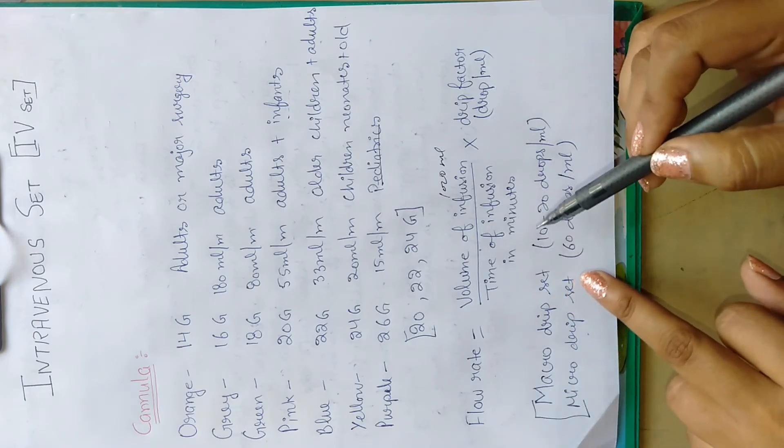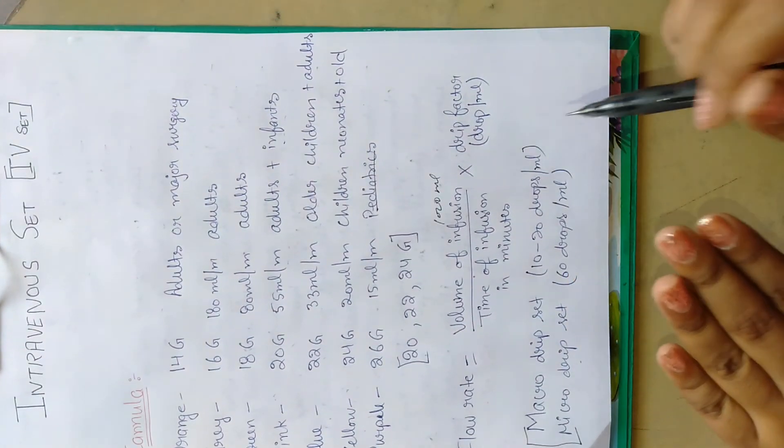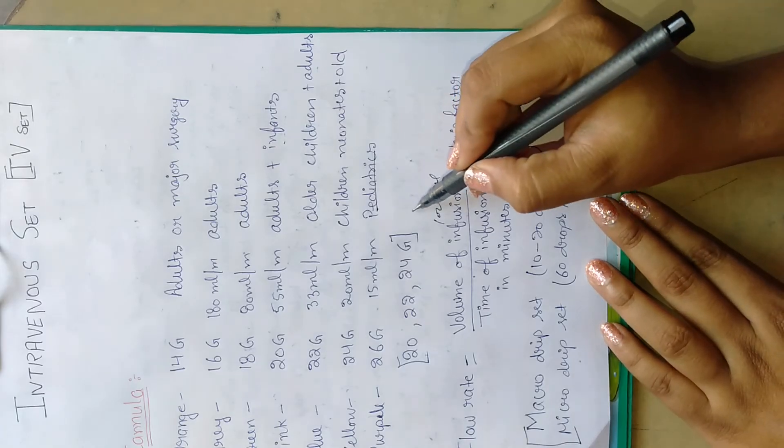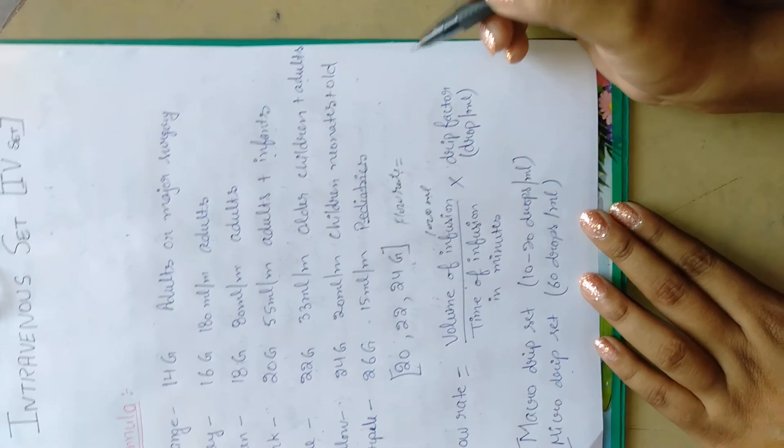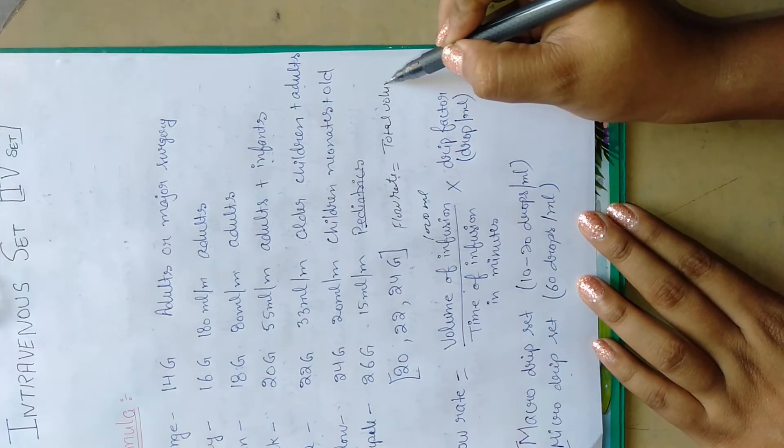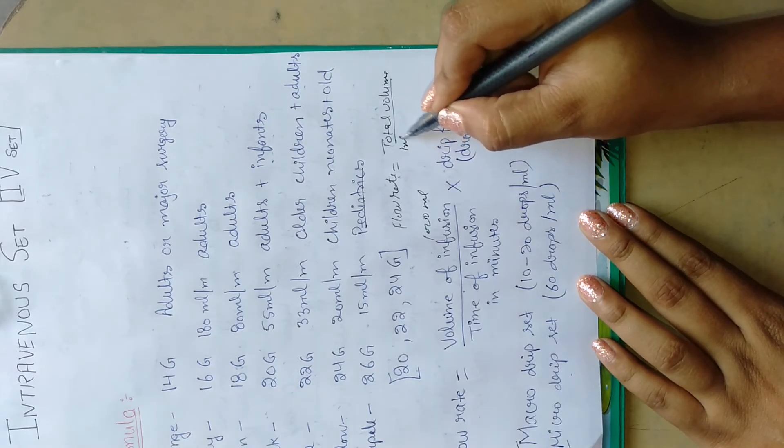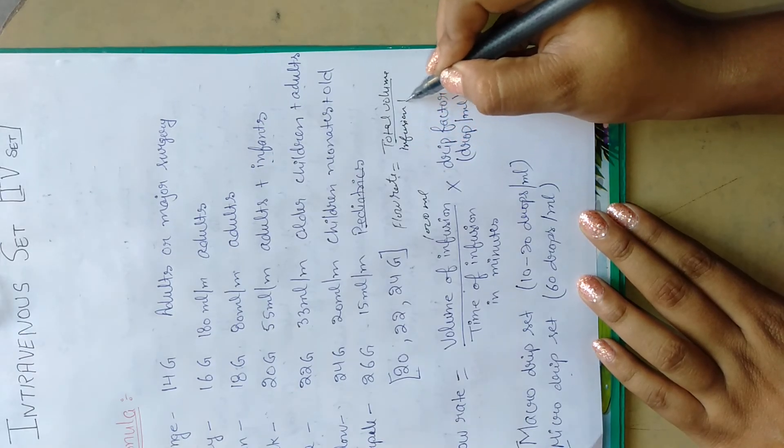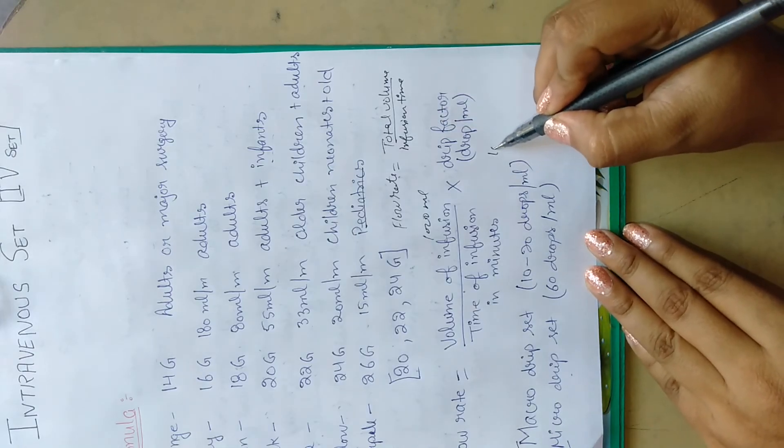If you calculate the infusion rate, you can see the flow rate equals total volume over infusion time. Total volume, for example, is 1000 ml.